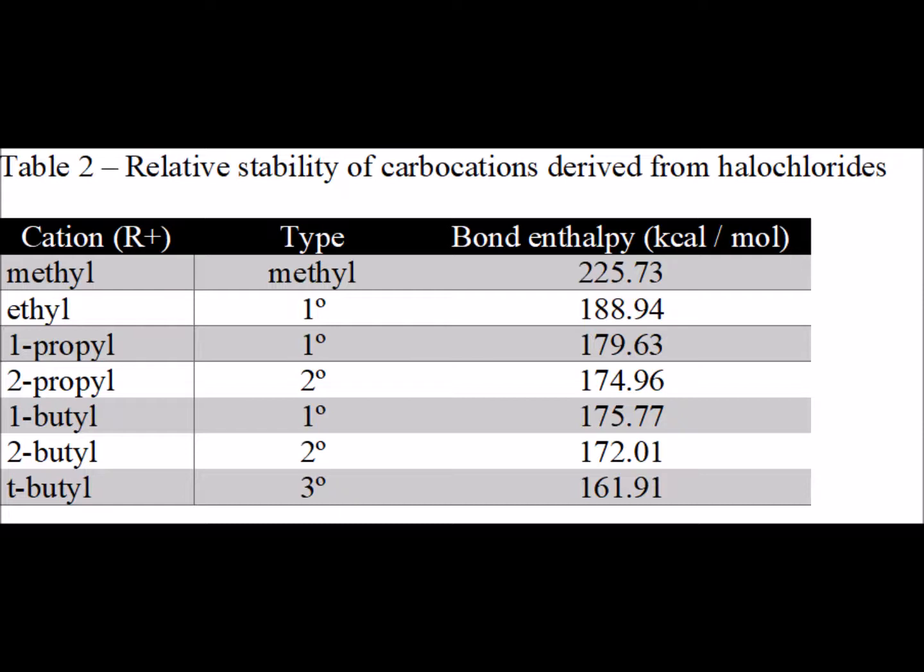Primary carbocations are the next less stable one. Secondary carbocations are more stable, and tertiary carbocations are the most stable of all. You see that the lower the energy required to break the bond is linked with the stability of the resulting carbocation. So tertiary is more stable than secondary, more stable than primary, which is more stable than a methyl carbocation.